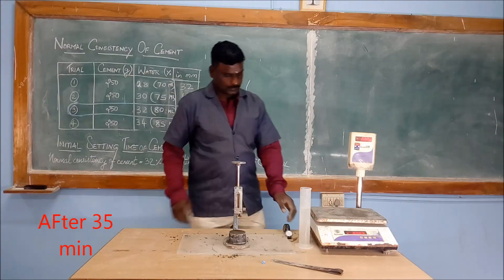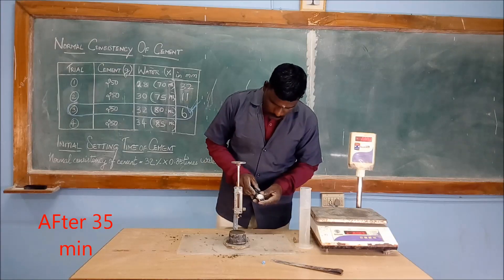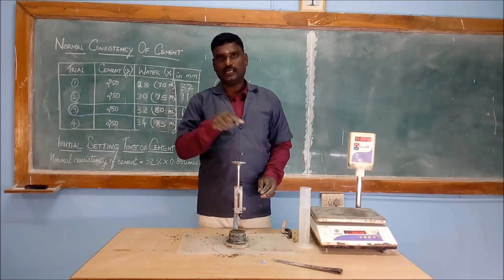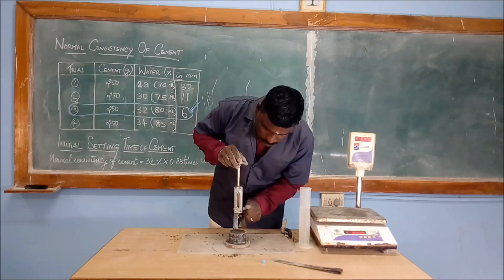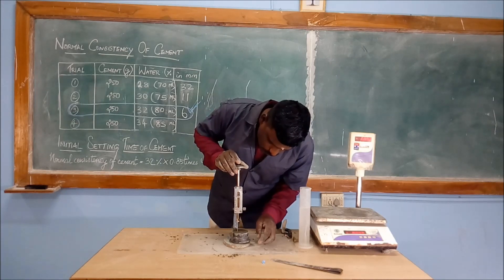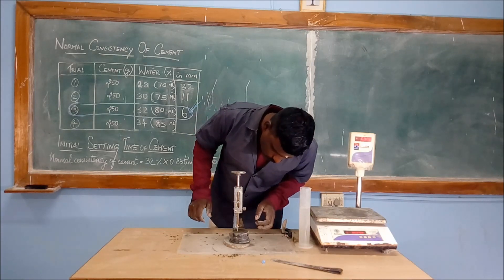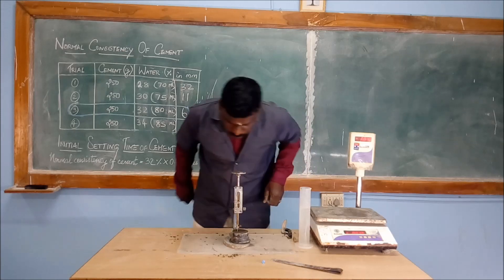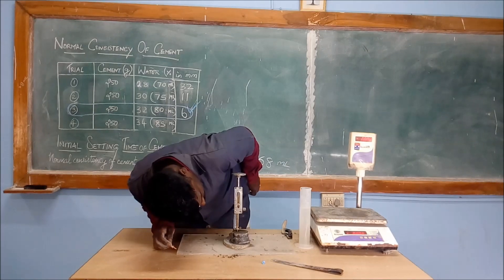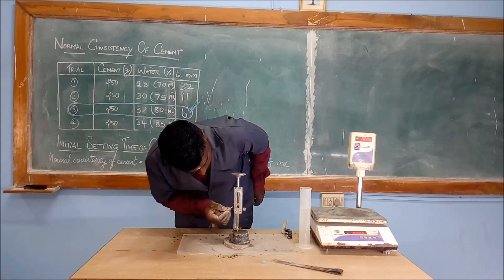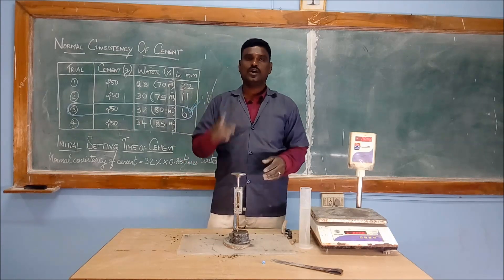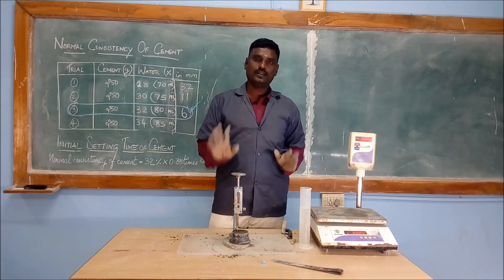After thirty-five minutes, we are checking the time again. It is thirty-five minutes. We are again slowly releasing and slightly shifting the mould to another place, and now we are checking the initial setting time. The plunger penetrates into the mould, and you can see the pointer indicates seven — which is at thirty-five minutes.